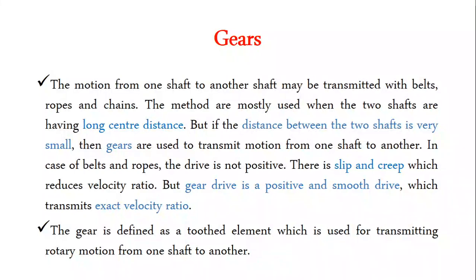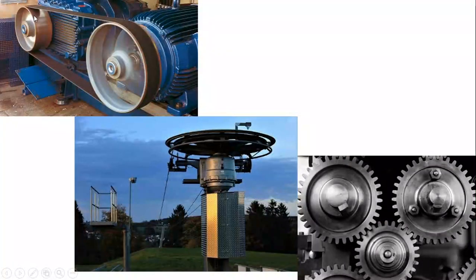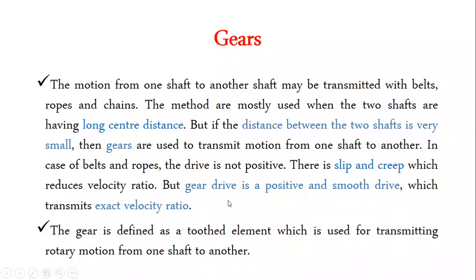In the case of belt and rope drives, it is not a positive type. There is slip and creep which reduce the velocity ratio. In belt drive, there is the possibility of the belt slipping from the pulley, so the velocity ratio may reduce. You cannot achieve an exact velocity ratio from belt and rope drives. But gear drives are a positive and smooth drive which transmit an exact velocity ratio.